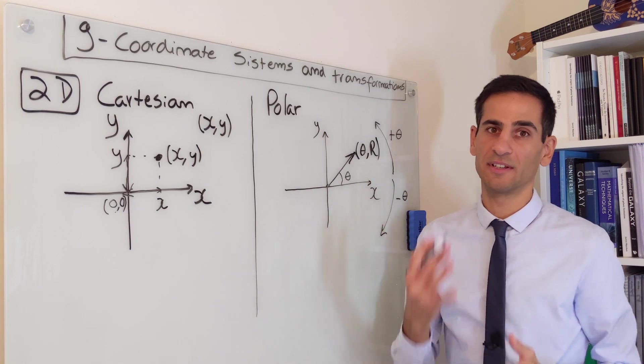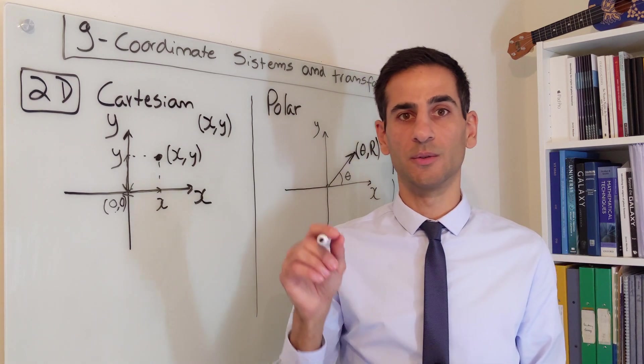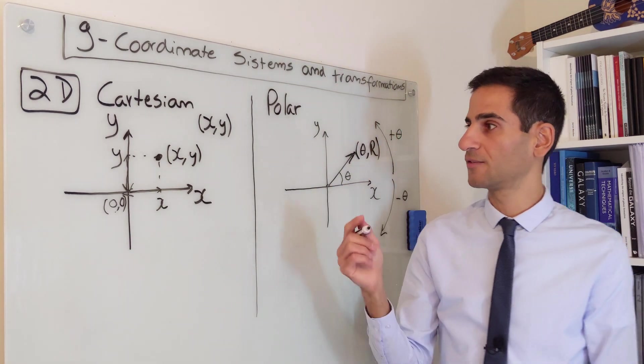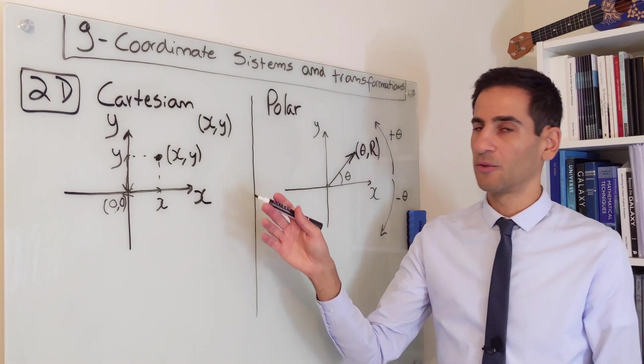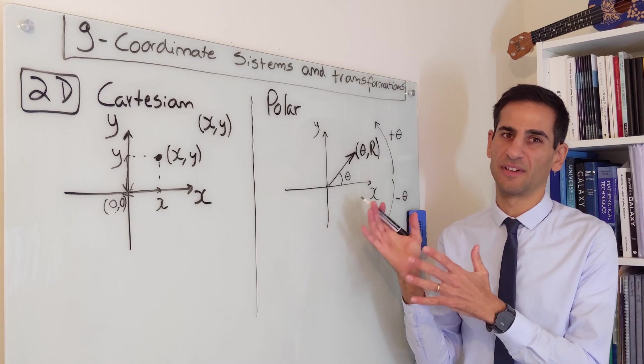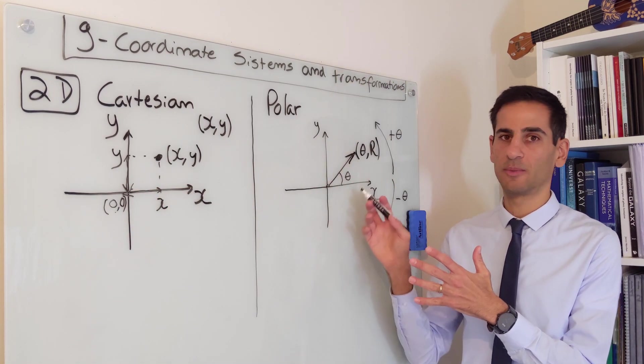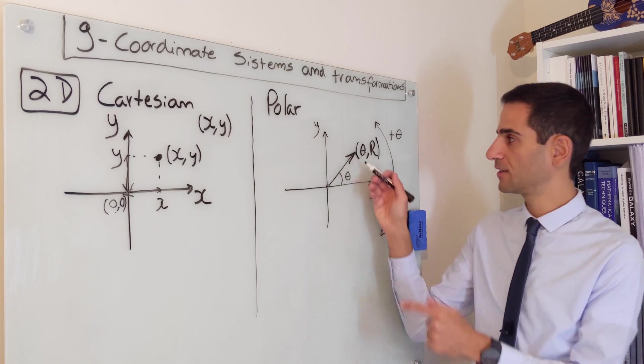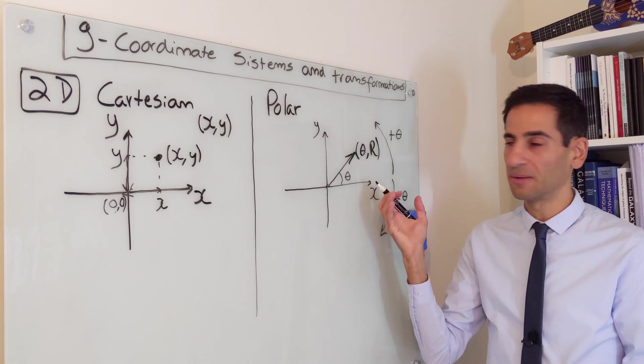But it is a very different way to identify points. And there is a very big difference. With the exception of the origin, for which you only have one combination, for all of the points in polar coordinates, you can always go back to the point, for example.